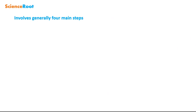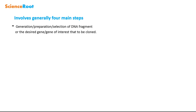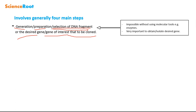When you study gene cloning, you will definitely encounter four main steps. The first step is the generation, preparation, or selection of the DNA fragment — the desired gene, or the gene of interest — the gene from which we want to get the product. This step is very important and relies on molecular tools such as restriction enzymes.